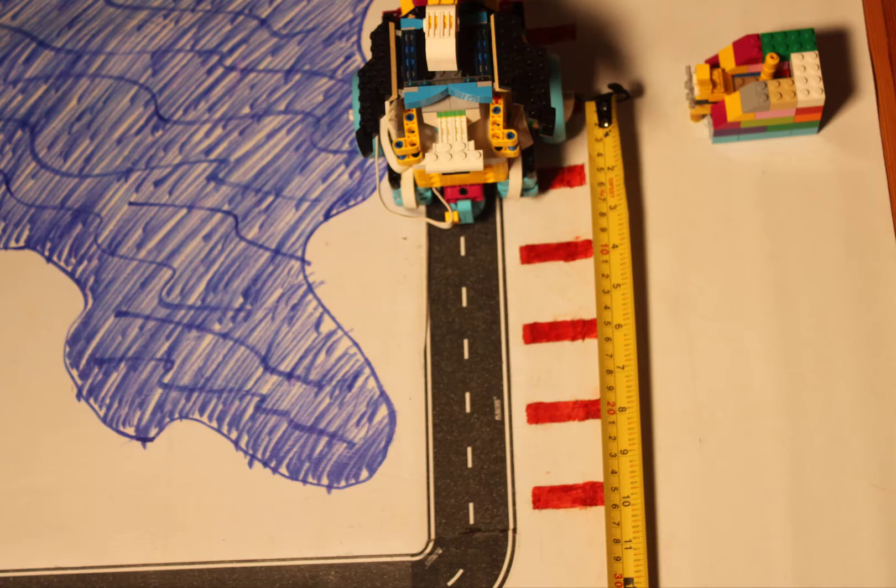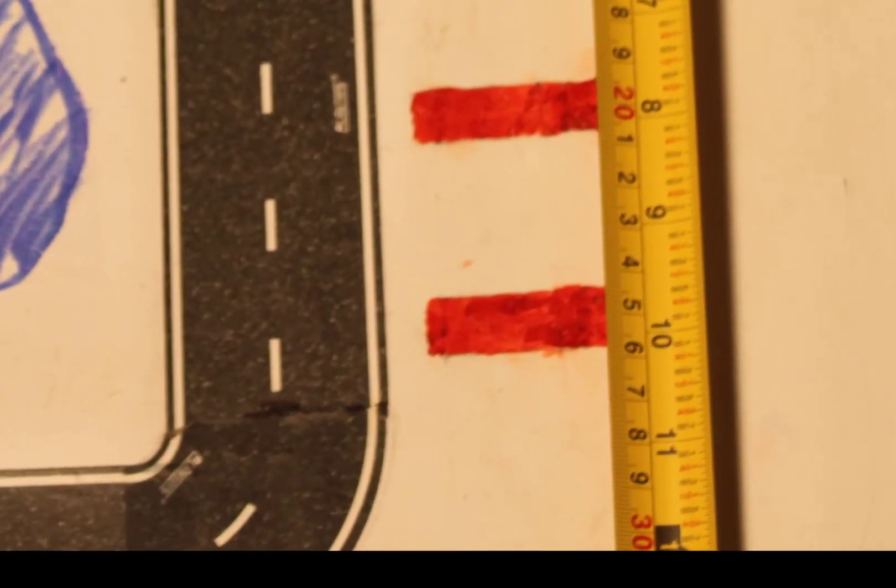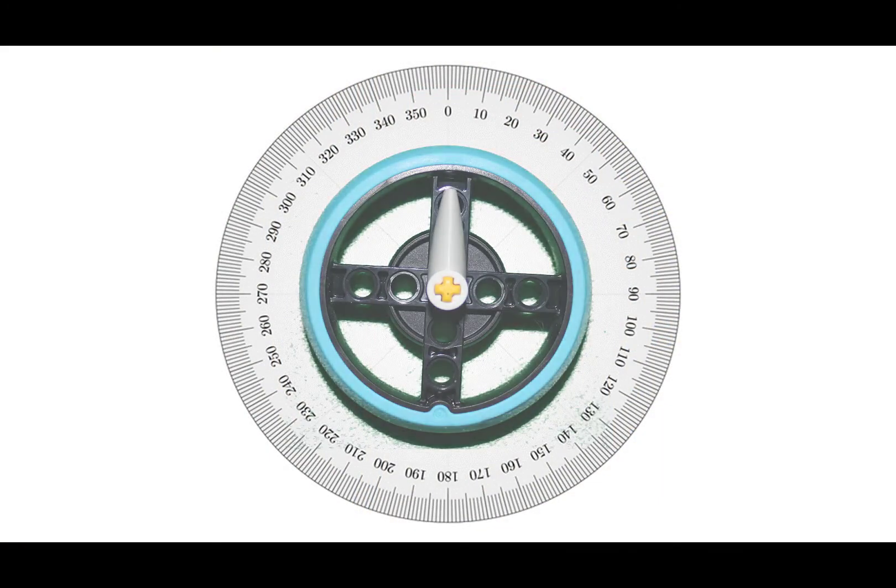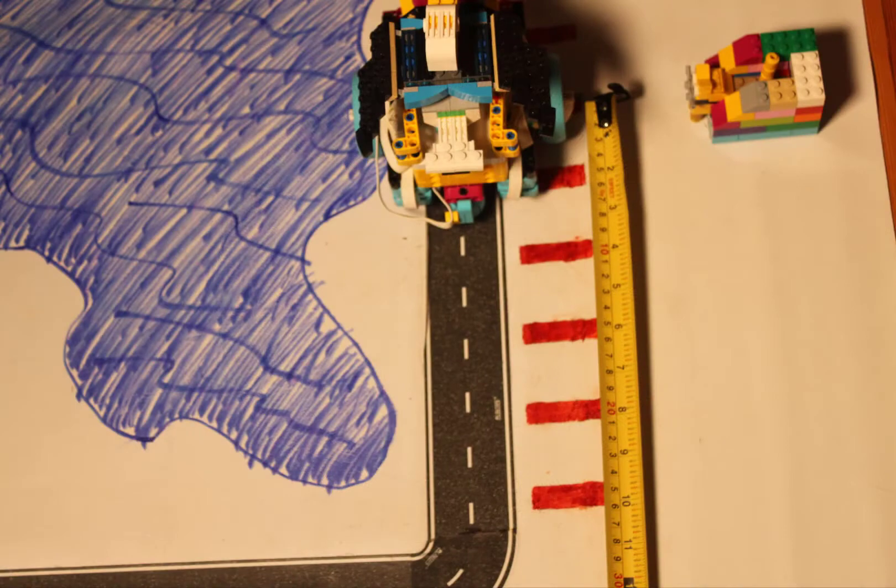Let's measure how far that is. It's 28 centimeters. So how will Chariot know when it's gone that far while it's following the edge of the road? It turns out that the motors keep track of how far they turn in degrees, but that's not the same as centimeters.